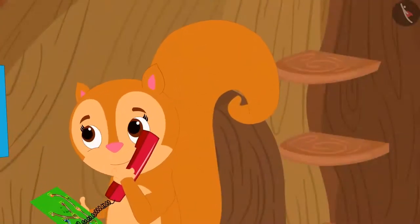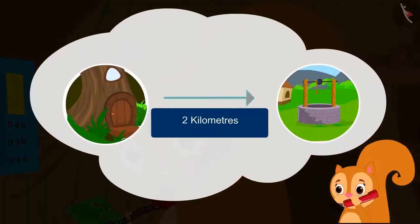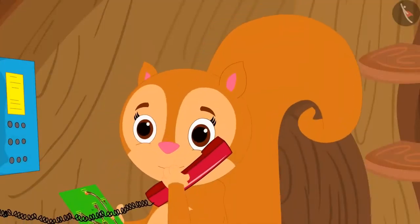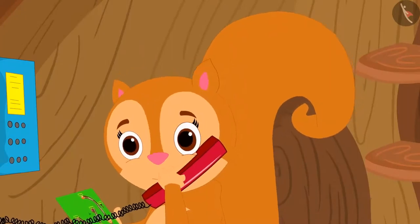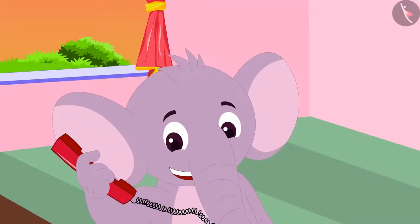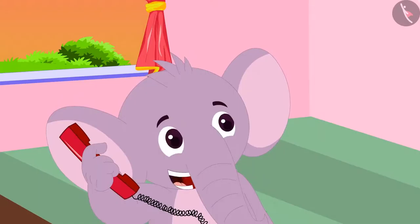Chanda thought she had heard Appu wrong. She told Appu, I think you mistakenly said two kilometers in place of two meters. You do remember, right? I already know all about meters. On hearing this, Appu laughed and said, Chanda, I did say two kilometers.